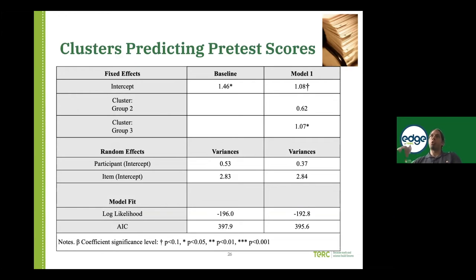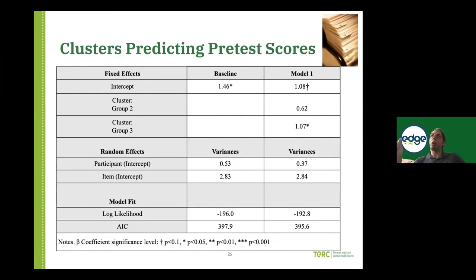Cluster two — the group at the very bottom with very fast, short gazes and very quick gameplay — tended to do marginally better on the pre-test, which was a bit surprising. However, it was not a statistically significant improvement over that baseline group.